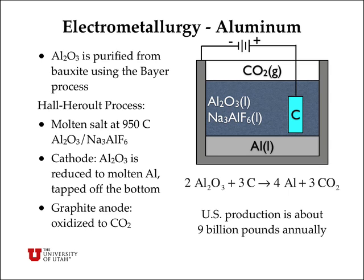At the anode, the oxide from the aluminum oxide is converted with the carbon from the graphite electrode into carbon dioxide. The secret of this process is that aluminum oxide is an extremely high temperature material, but it dissolves in cryolite, which is sodium aluminum fluoride. That dissolving process allows the system to become liquid at a relatively mild temperature of 950 Celsius and allows this electrochemistry to occur. About 9 billion pounds of aluminum is produced in the U.S. by this electrochemical process each year.